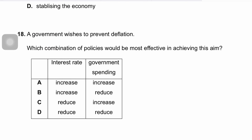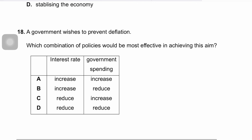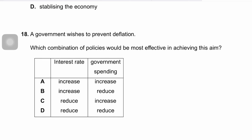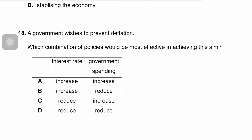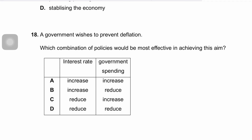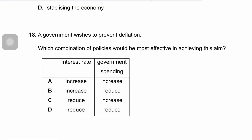Question eighteen: the government wishes to prevent deflation. Deflation here arises from a recession where aggregate demand falls, causing cyclical unemployment and economic contraction. The most effective combination of policies would be expansionary monetary and fiscal policies. A reduction in interest rates is expansionary monetary policy, while an increase in government spending is expansionary fiscal policy. The correct answer is C.